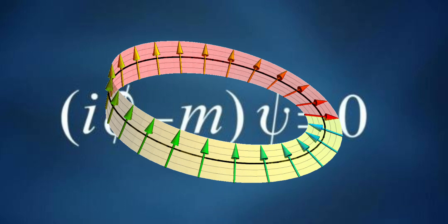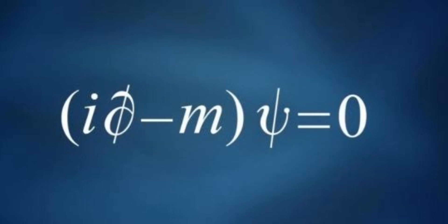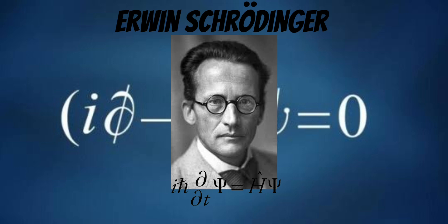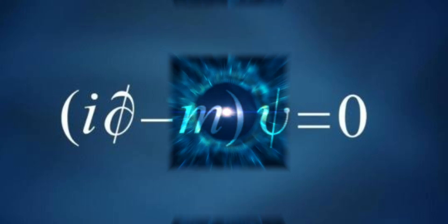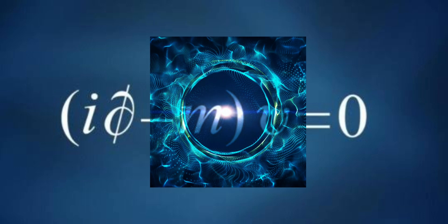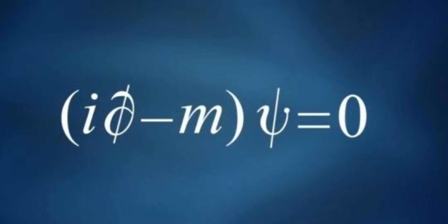This wave function didn't just describe the position of the particle, as in the Schrödinger equation, but also incorporated its intrinsic angular momentum, known as spin. The inclusion of spin was a key feature that allowed the Dirac equation to describe the fine details of the electron's behavior.